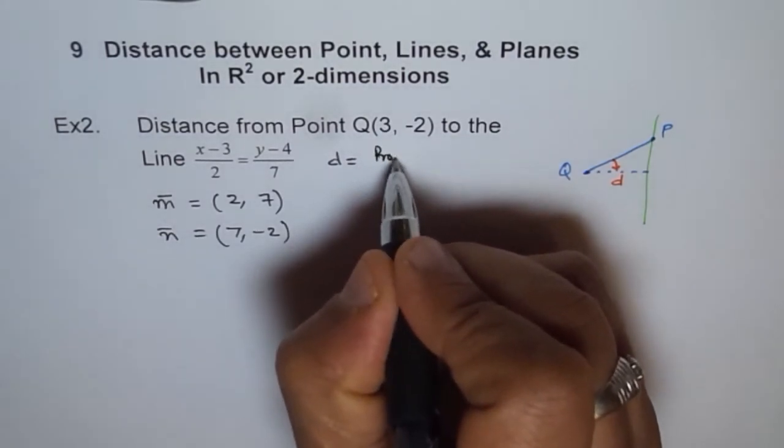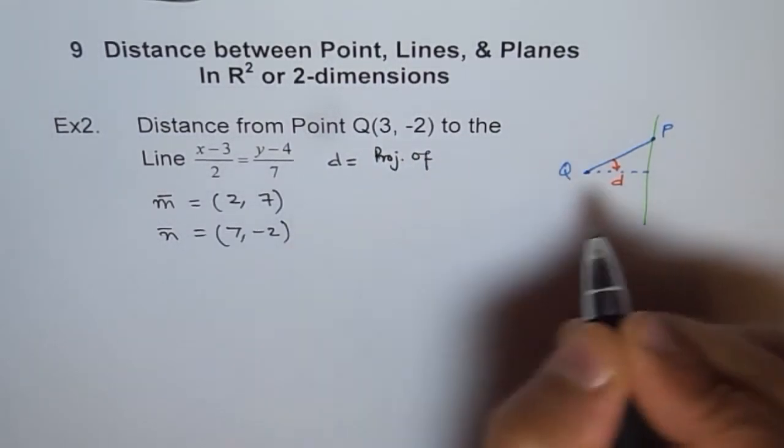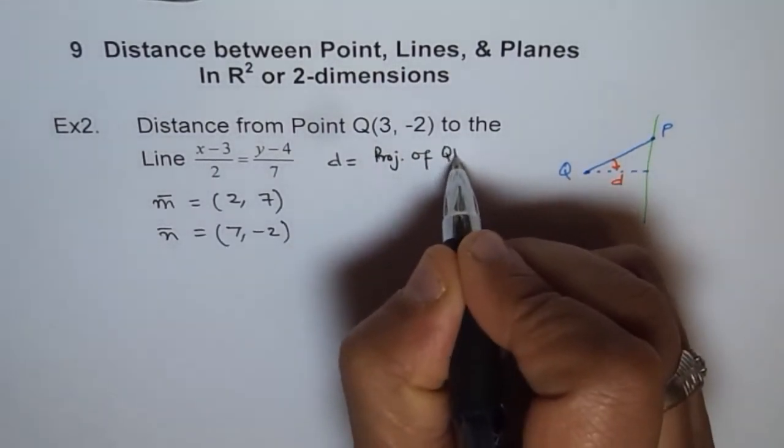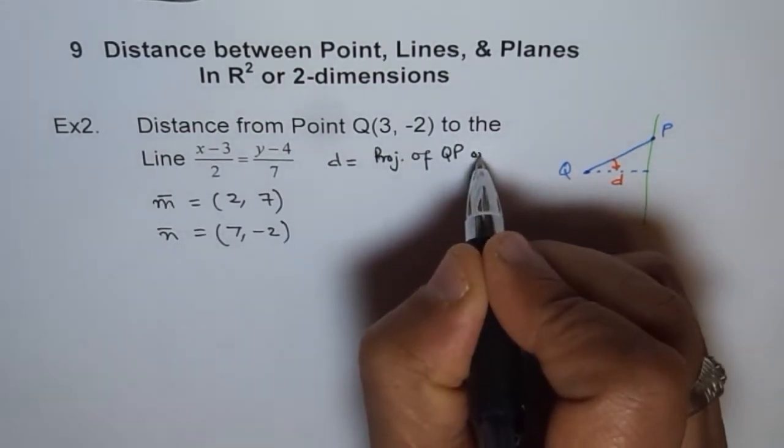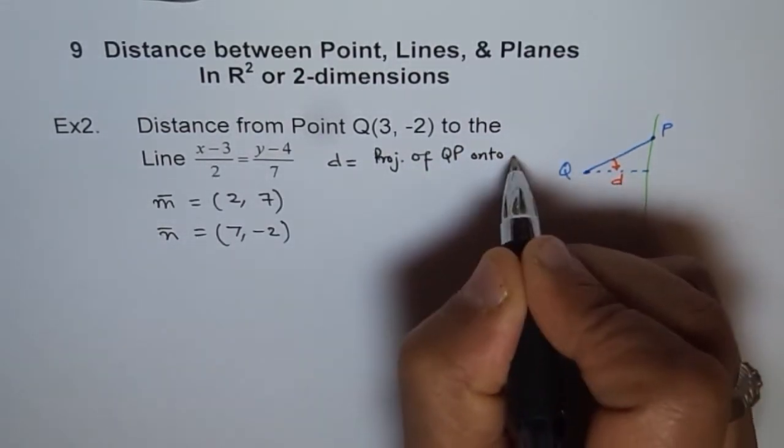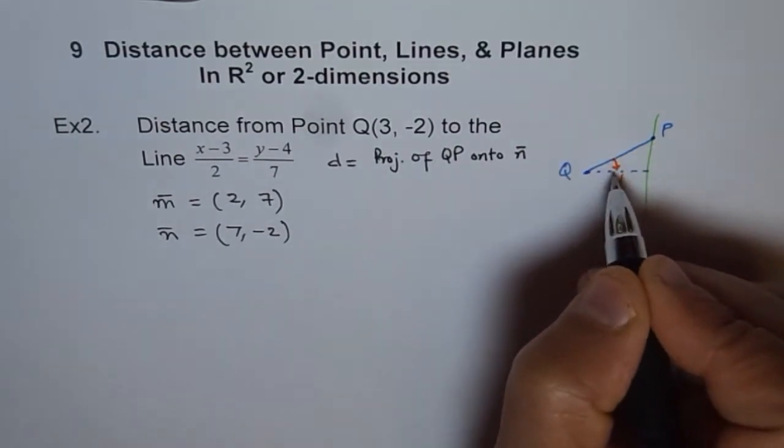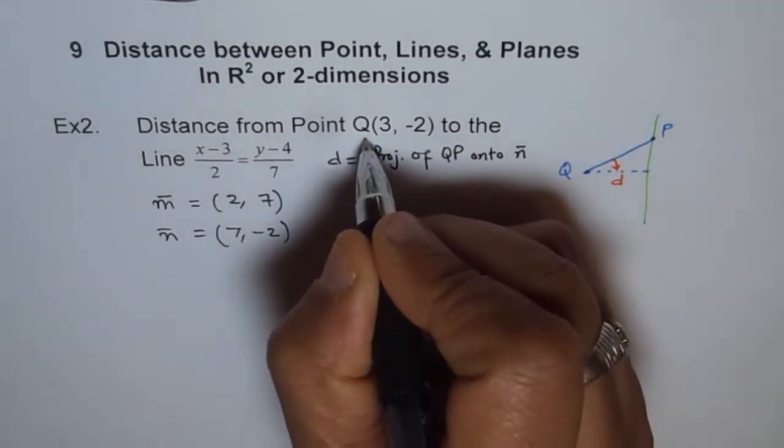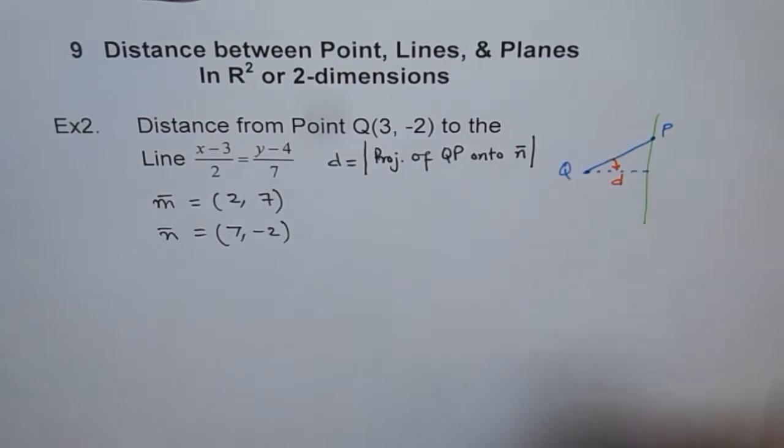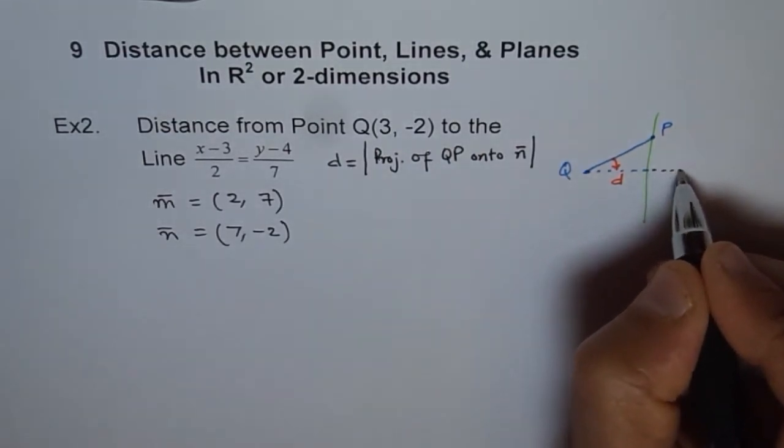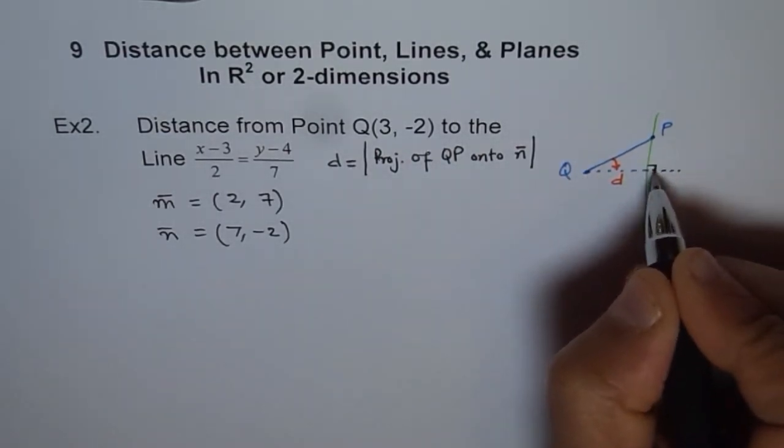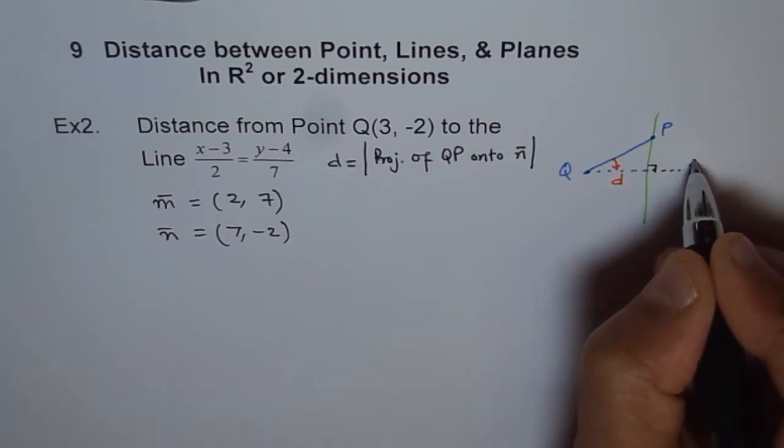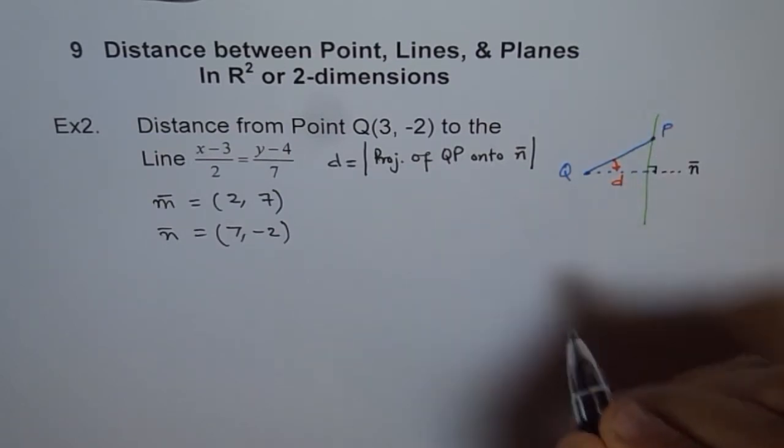So it is like a projection of QP onto normal. That is the shortest distance. And always absolute value of that. Because this vector, which is perpendicular to the line, is actually normal to your line. And that is the shortest distance.